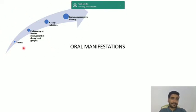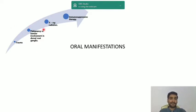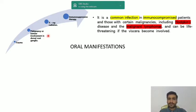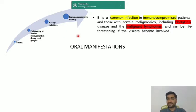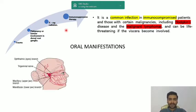The predisposing or triggering factors that influence varicella zoster virus to reactivate include trauma, malignancy or tumor involving the dorsal root ganglia, x-ray radiation, and immunosuppressive therapy. It is a common infection mainly seen in immunocompromised patients. Malignancies like Hodgkin's disease or malignant lymphomas involving the dorsal root ganglia may reactivate the virus. Sometimes conditions may be life-threatening if viscera is also involved.